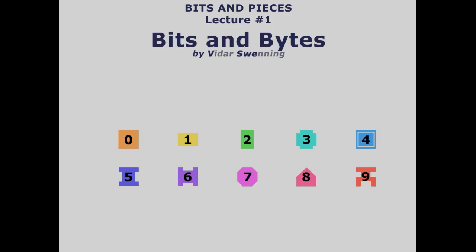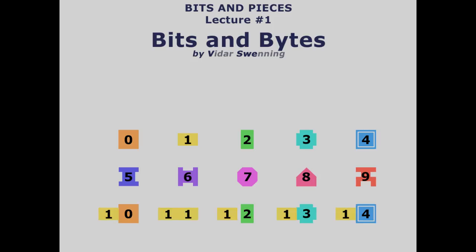We'll take a closer look at how to count, because things you might take for granted might not always be the case. How do we continue from here? We don't have any more numbers, so therefore we combine some. We combine one and zero to make ten, one and one to get eleven, and so on. Ten, eleven, twelve, thirteen, fourteen — that's totally easy, you can probably do that in your sleep.